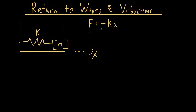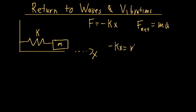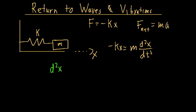Since this is the only force, we can plug it into Newton's second law: the net force equals mass times acceleration. So negative k x equals m times acceleration. If the block is only moving in the x direction, we can rewrite acceleration as the second derivative of x with respect to time. Simplifying by adding k x to both sides and dividing by m, we get the second derivative of x with respect to time plus k divided by m times x, all equal to zero.